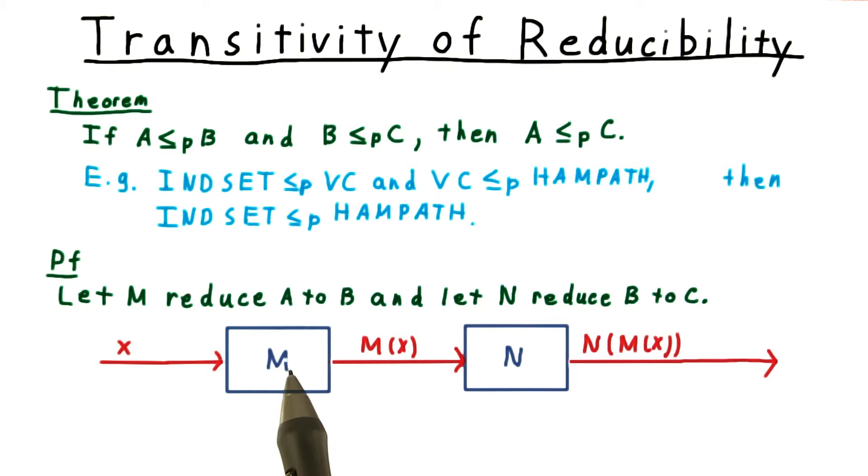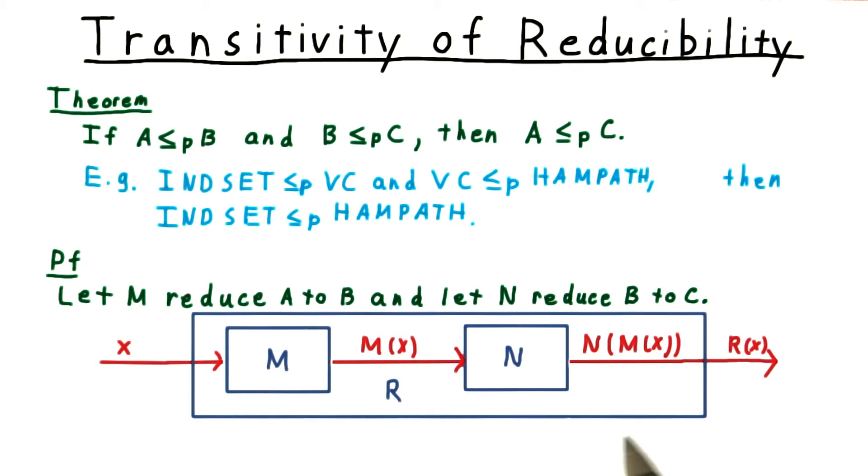we just pass it through M, and then pass that result through N. This whole process can be thought of as another computable function, R. Note that like M and N, R is polynomial time.